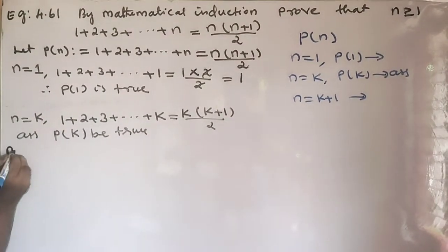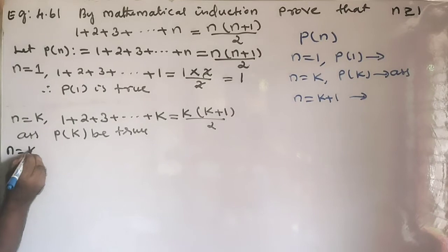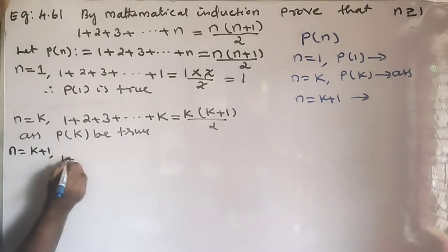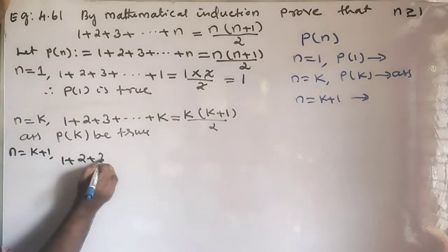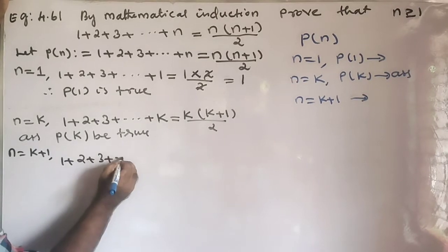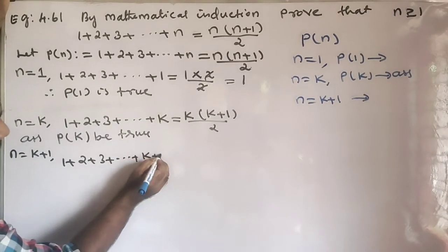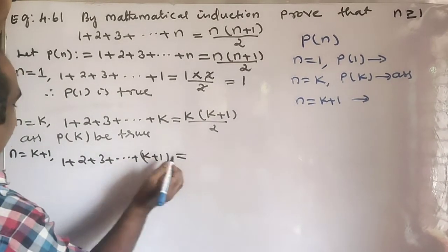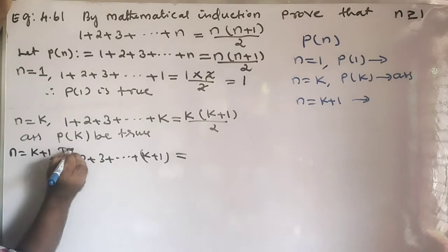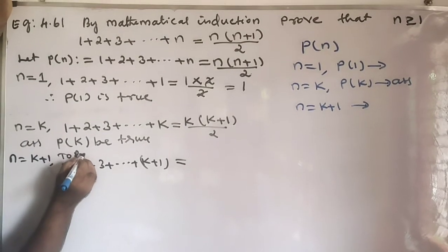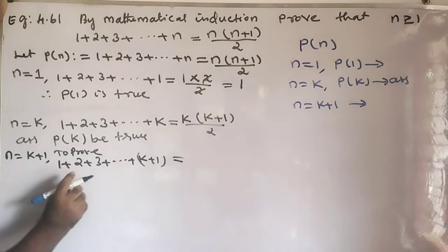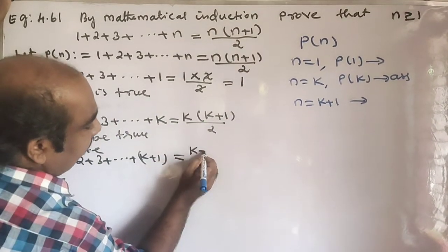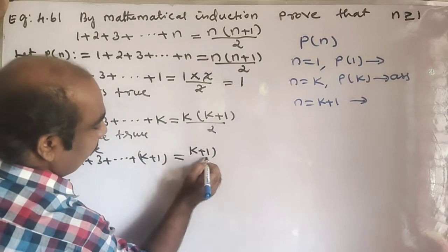Third step: for n equal to k plus 1, we need to prove that 1 plus 2 plus 3 plus etc. plus (k+1) equals the required expression.